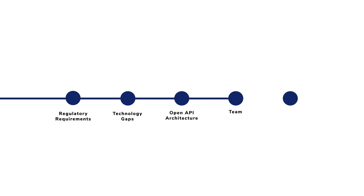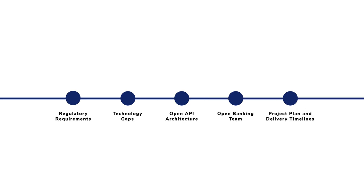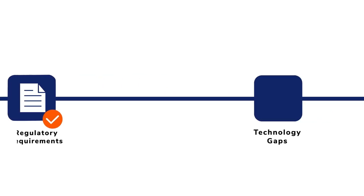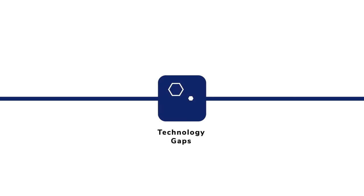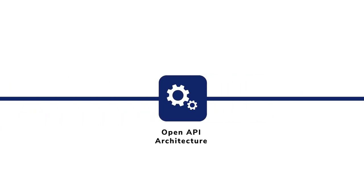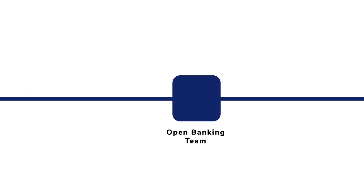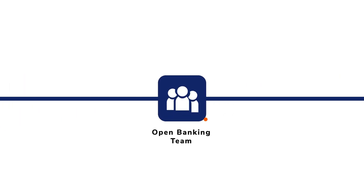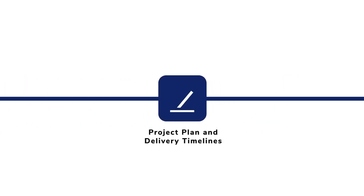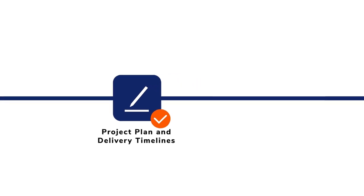A successful open banking implementation helps banks to understand the regulatory requirements, determine technology gaps, define an open API architecture, assemble an open banking team, and create a project plan and delivery timelines.